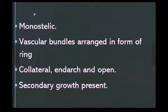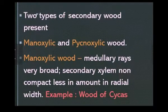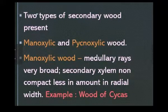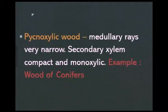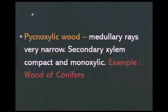Two types of secondary wood are produced in gymnosperms: manoxylic and pycnoxylic wood. Manoxylic wood has broad medullary rays with secondary xylem that is not compact — secondary xylem is produced in lesser quantity, meaning the radial width of secondary xylem is very less. This type of wood is seen in Cycas and such genera.